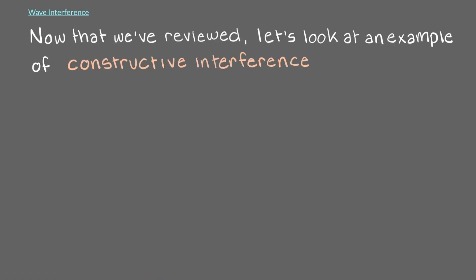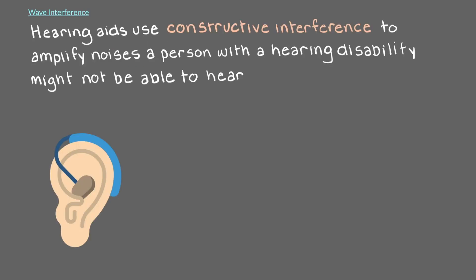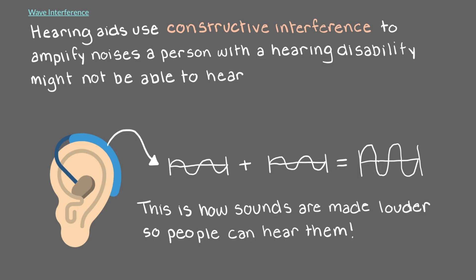Now that we've reviewed, let's look at an example of constructive interference. Hearing aids use constructive interference to amplify noises that a person with a hearing disability might otherwise not be able to hear. They use technology to generate sound waves that precisely match the sound waves entering the ear, which increases the amplitude of the waves. This is how sounds are made to be louder so that people can hear them.